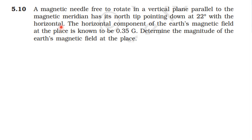Magnetism Exercise 5.10: A magnetic needle free to rotate in a vertical plane parallel to the magnetic meridian has its north tip pointing down at 22 degrees with the horizontal. The horizontal component of the earth's magnetic field at the place is known to be 0.35 gauss. Determine the magnitude of the earth's magnetic field at the place.